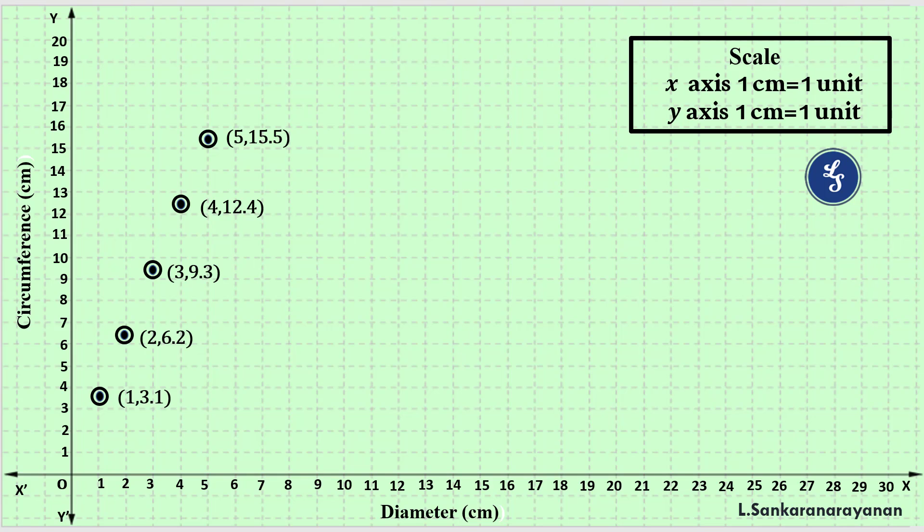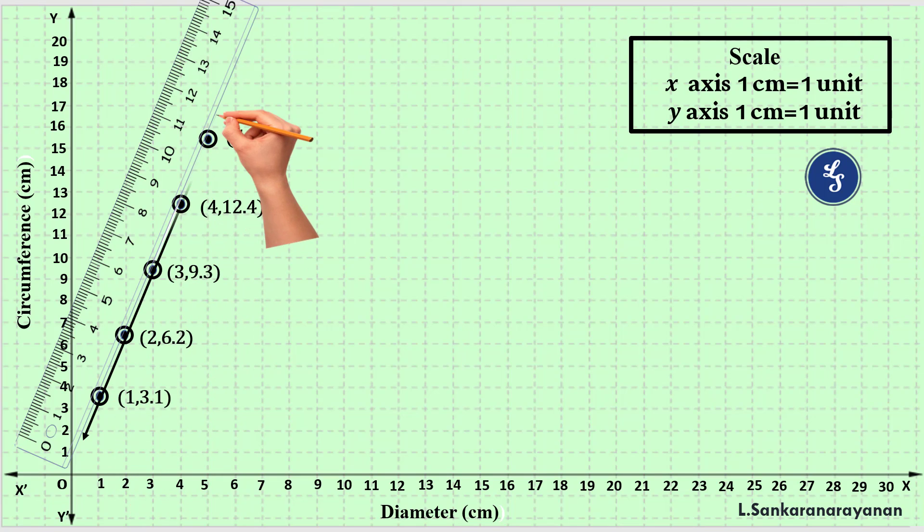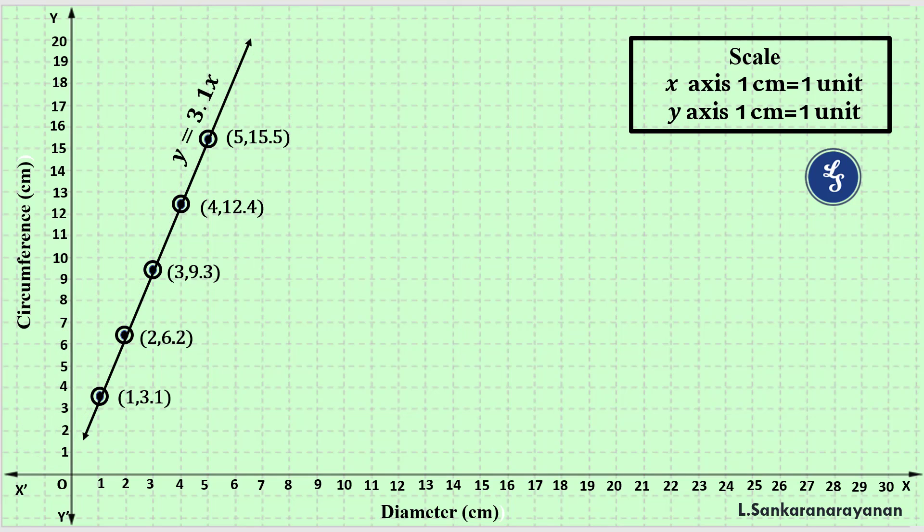What is the next step? You have to join these points through a line. You place your scale like this and draw a line. And you mark the name: y equal to 3.1x.